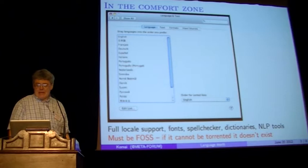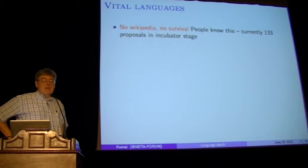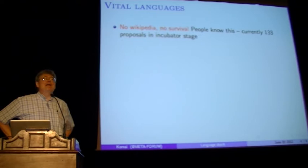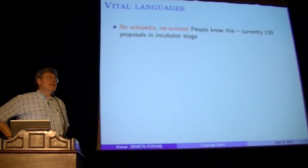Vital languages — languages that are not moribund — a few very clear statements can be made. First: no Wikipedia, no survival. If your language doesn't have a Wikipedia, you're in trouble. People know this. People in every walk of life, in every language, are very aware of this. This is why there are currently 133 language proposals in the incubator stage at Wikipedia, and many others that are being decided upon and haven't even yet made it to the incubator.